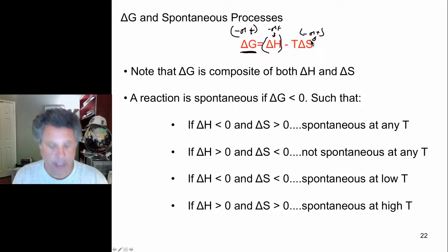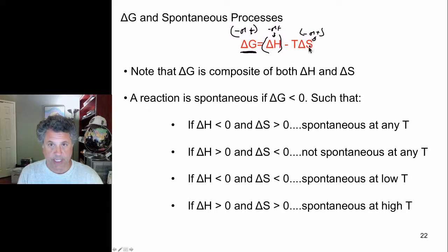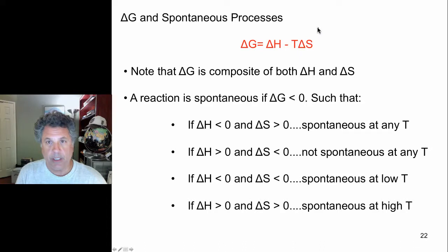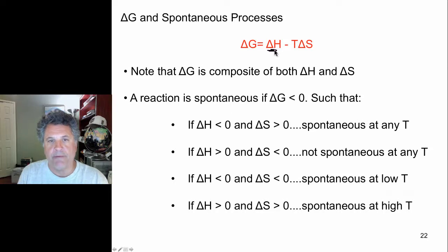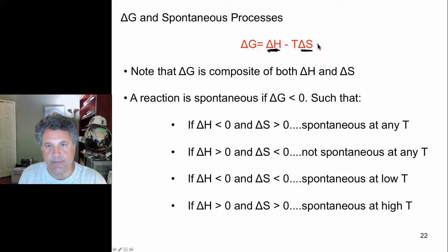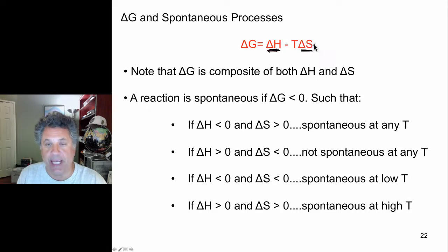Temperature T is in degrees Kelvin, so it is always positive. Delta H is positive if we need to break chemical bonds during the reaction. Delta S is positive if entropy increases — if disorder increases. Delta S is negative if order increases, meaning there is a loss of disorder and a gain of order.